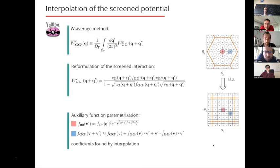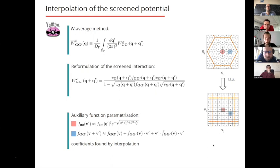Computing these averages requires representing the screened interaction within the numerical points, which is done by interpolation. We reformulate the correlation part of the screened interaction in terms of an auxiliary function f that resembles the irreducible polarizability, then interpolate this auxiliary function between numerical points and their nearest neighbors, enabling the Monte Carlo averages.